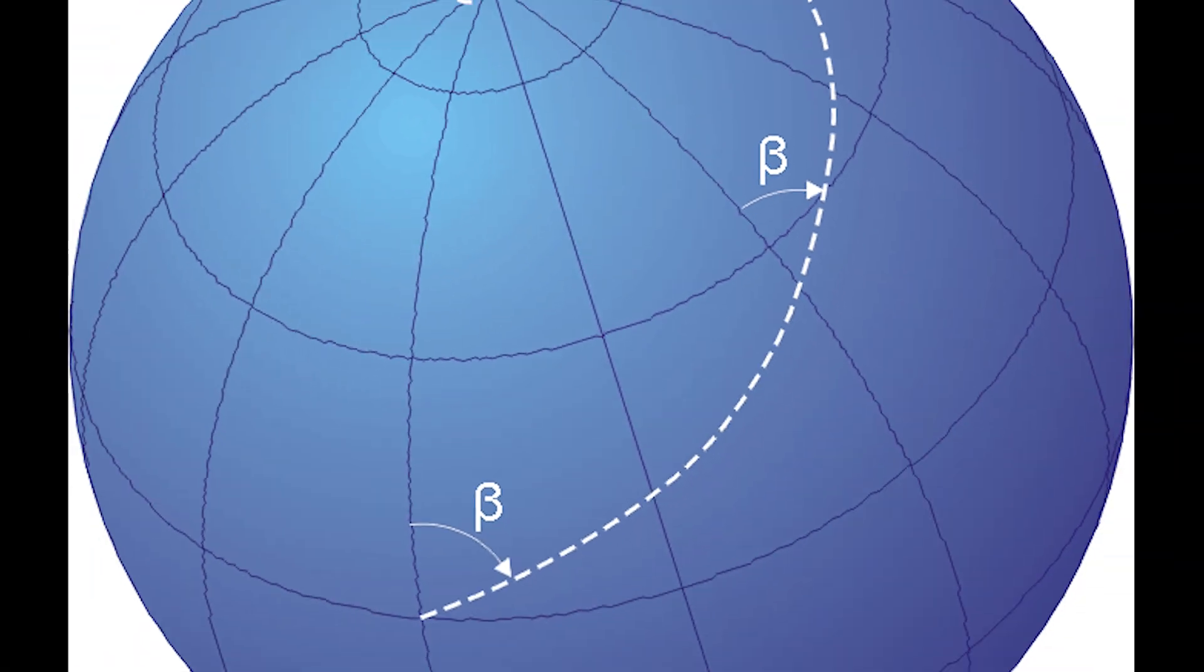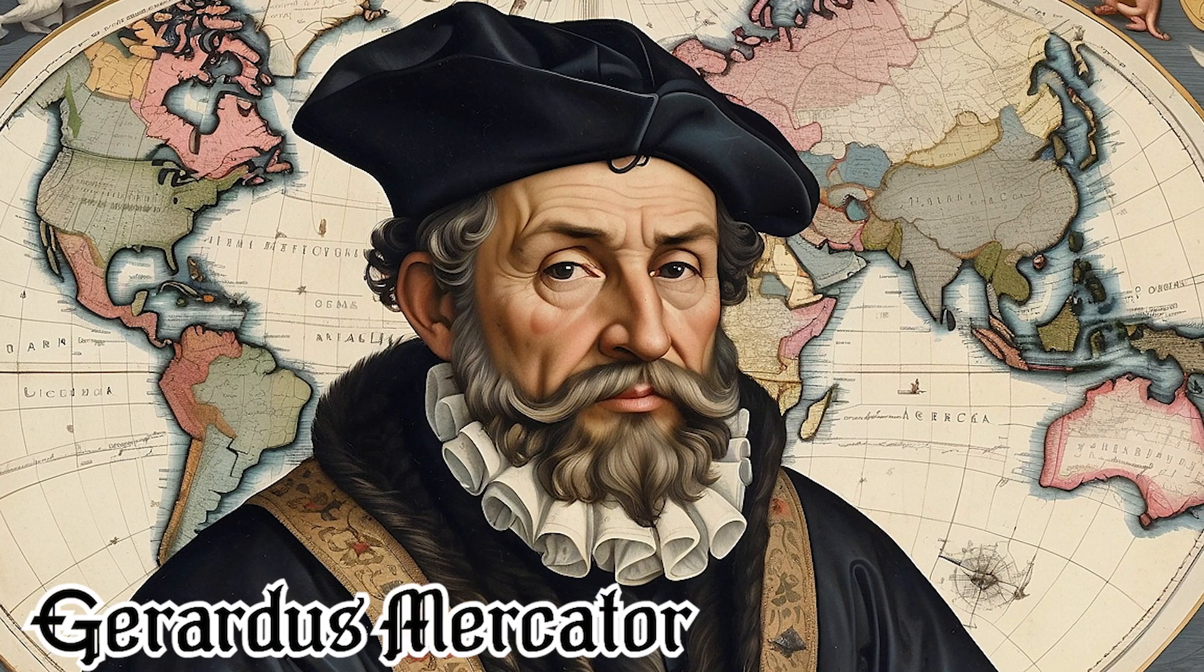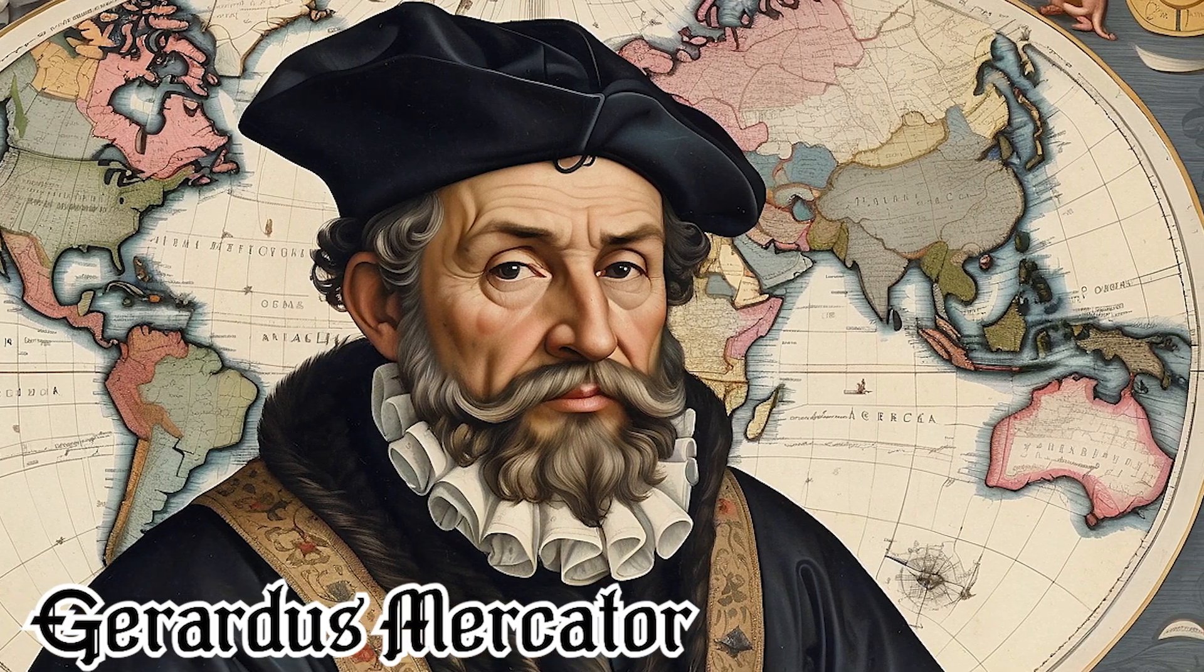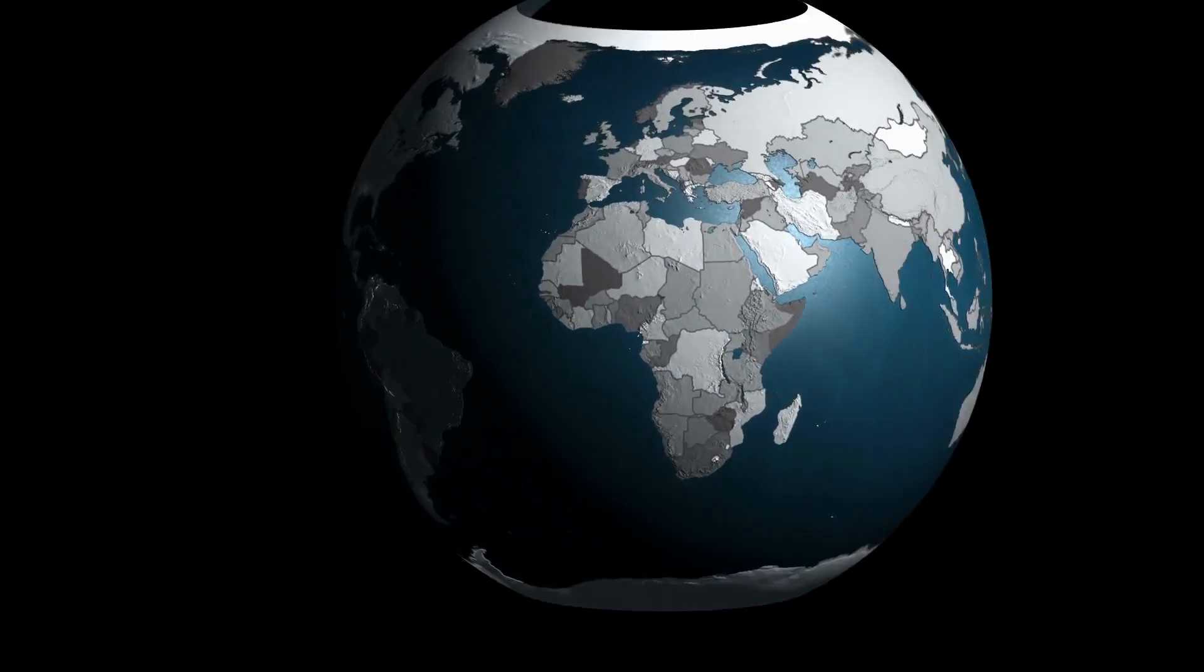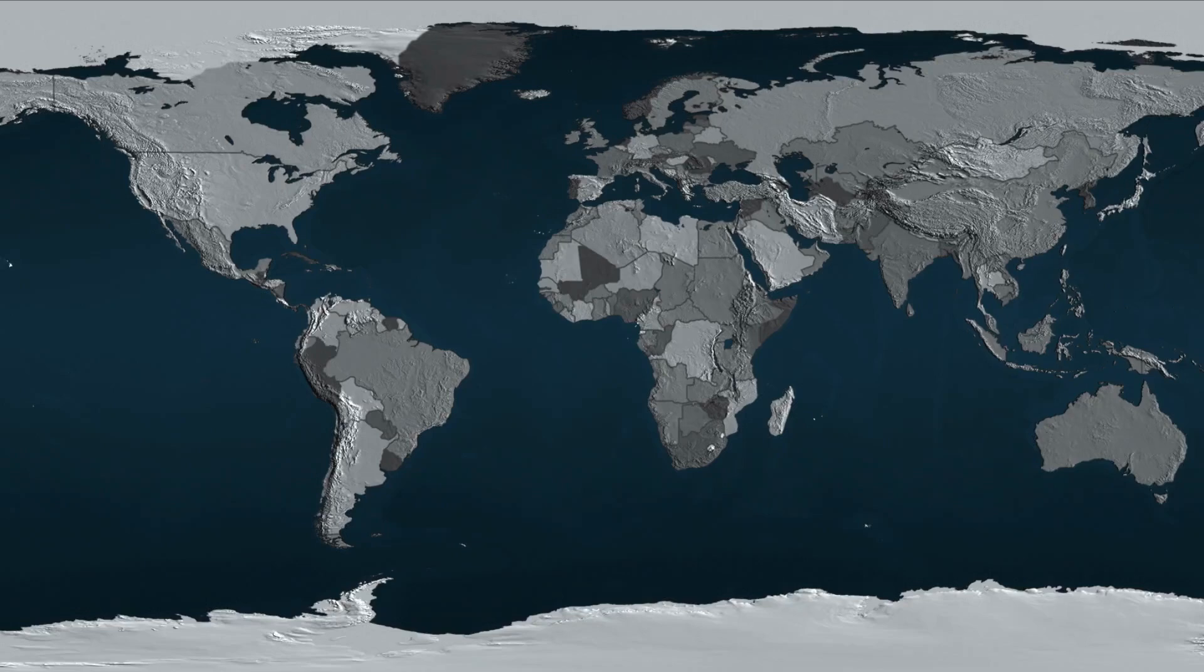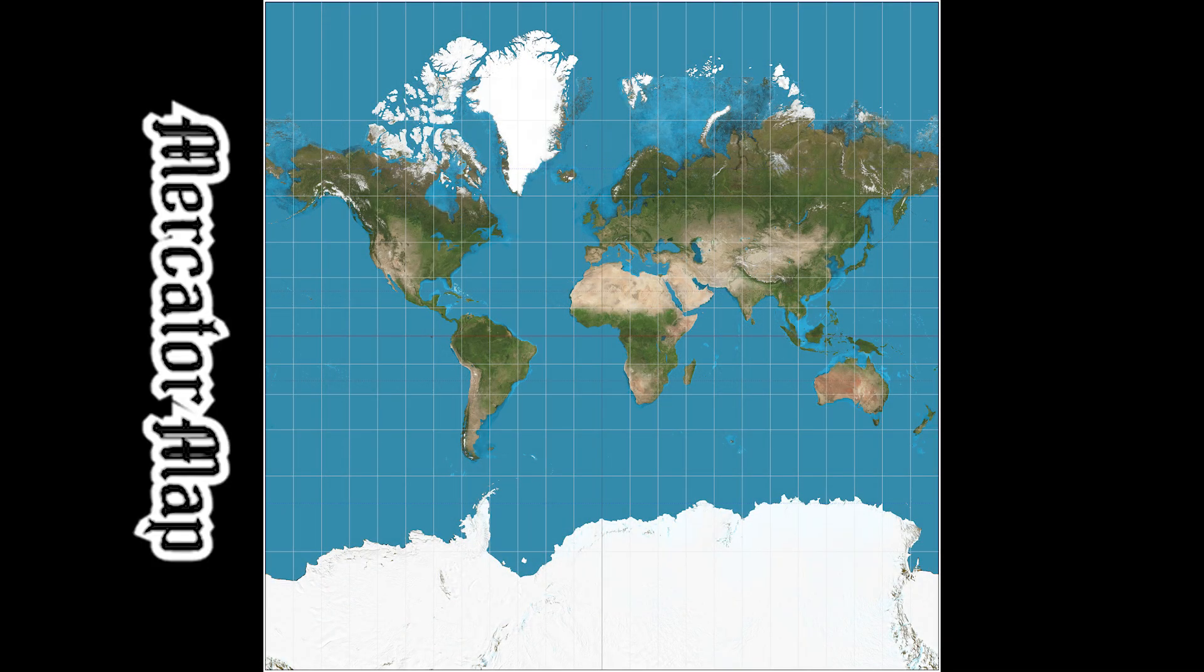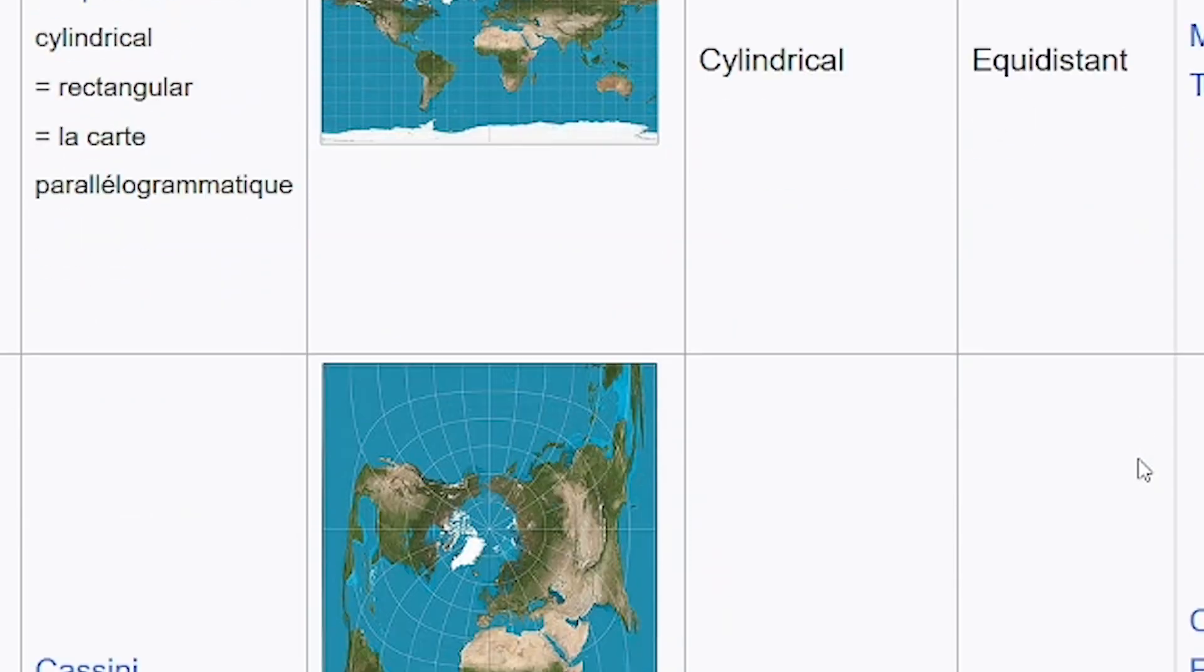Inspired by the discovery of loxodrome, Gerardus Mercator, a Flemish cartographer, found a brilliant way to represent our spherical Earth on a flat map. He devised a special projection, now known as the Mercator map. While other map projections existed, the Mercator stood apart.